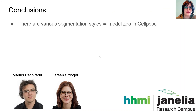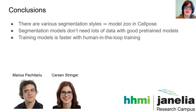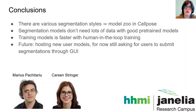In summary, there are various segmentation styles that biologists use, so in CellPose we've created a model zoo with a variety of pre-trained models to choose from to start your annotations. We found that segmentation models don't need lots of data to work well as long as you have good pre-trained models, and hopefully these CellPose pre-trained models give you a good starting place. Training models can be even faster using human-in-the-loop training, and in the future we're thinking about hosting a new user model.